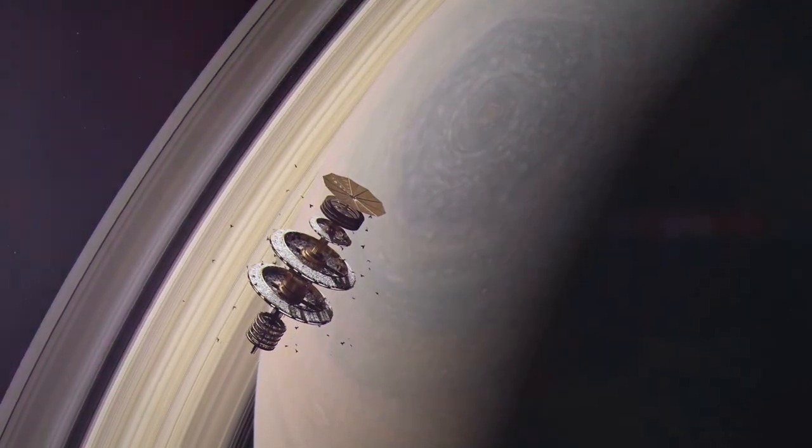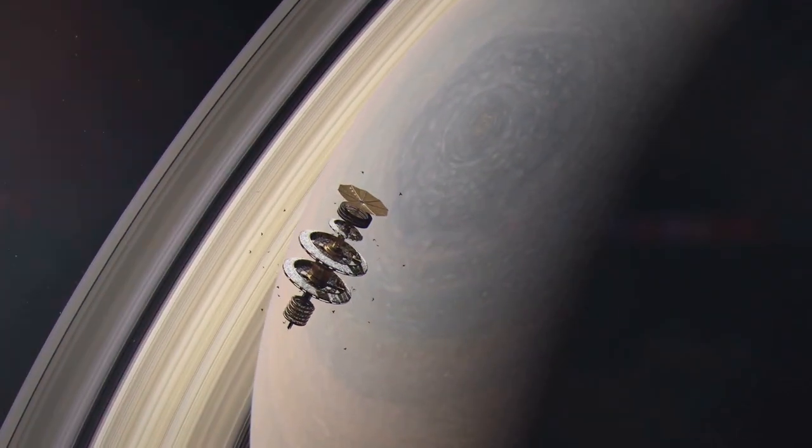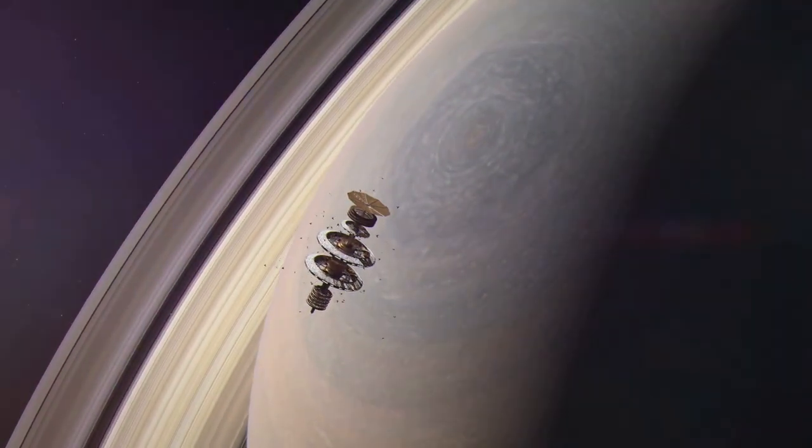The structure of planetary rings is not uniform. Instead, they are organized into a series of concentric ringlets, each with its unique characteristics. Some are bright and wide, others are faint and narrow.